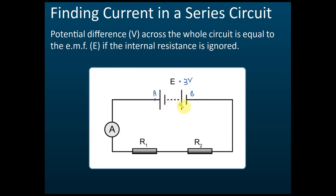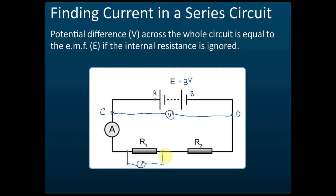A to B is 3 volts. Now if we have points C and D, and I connect a voltmeter to these two points, the reading is also 3 volts. So A to B is 3 volts, C to D is also 3 volts. That's very important — because usually they just give you the EMF, and from any point to any other point across the supply it is still 3 volts.